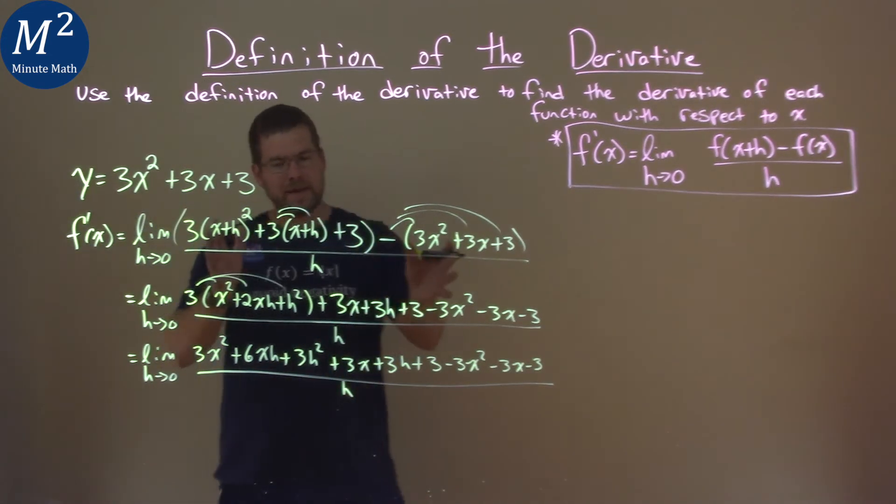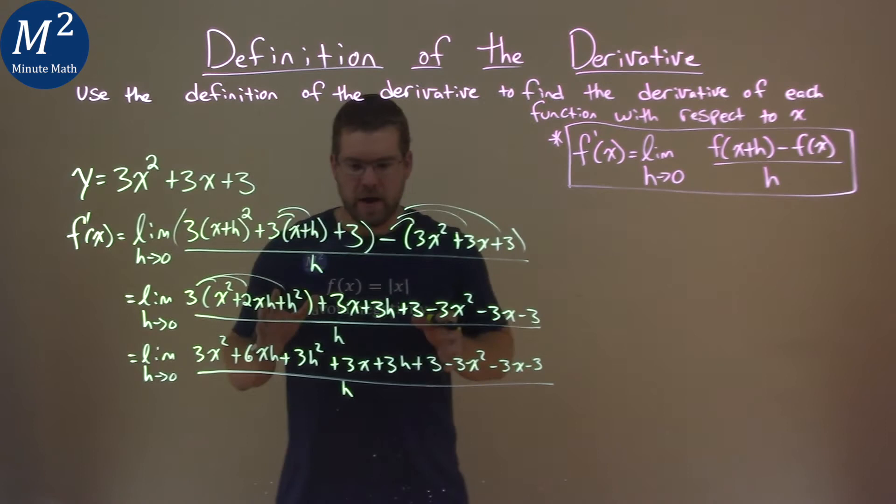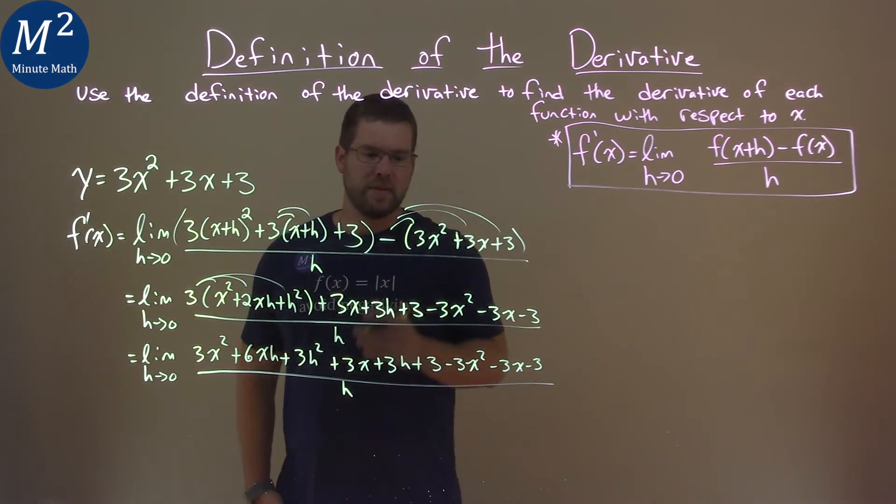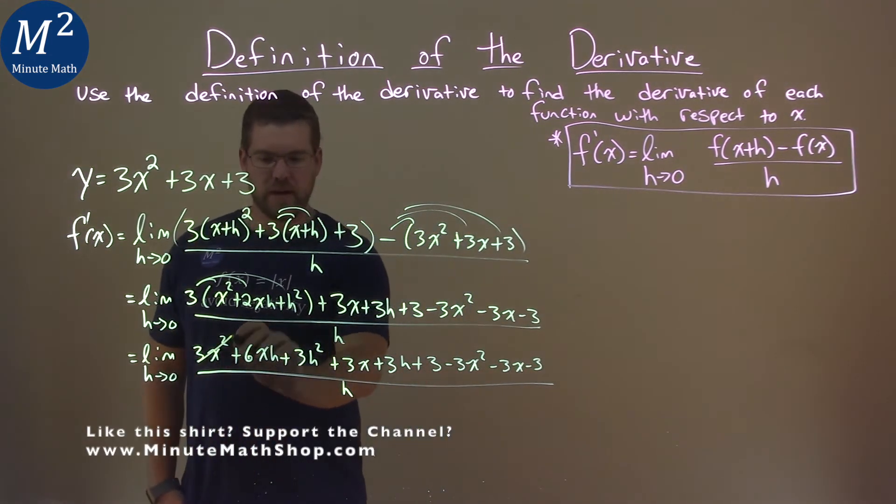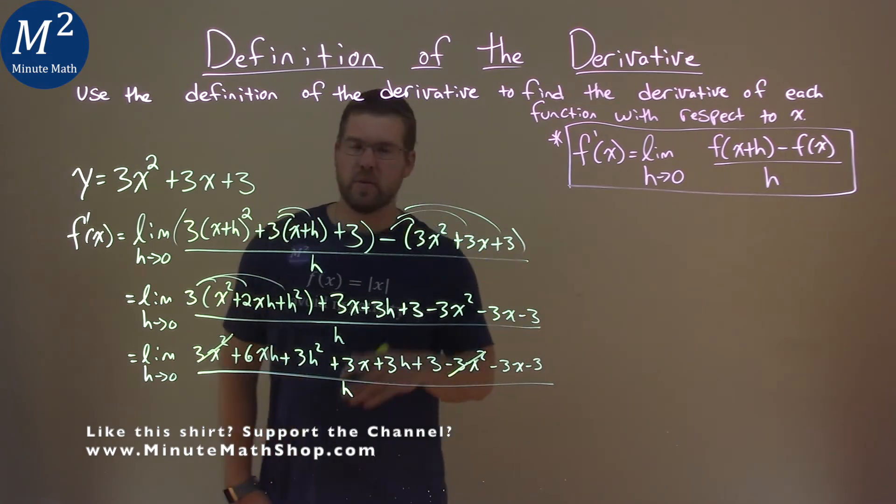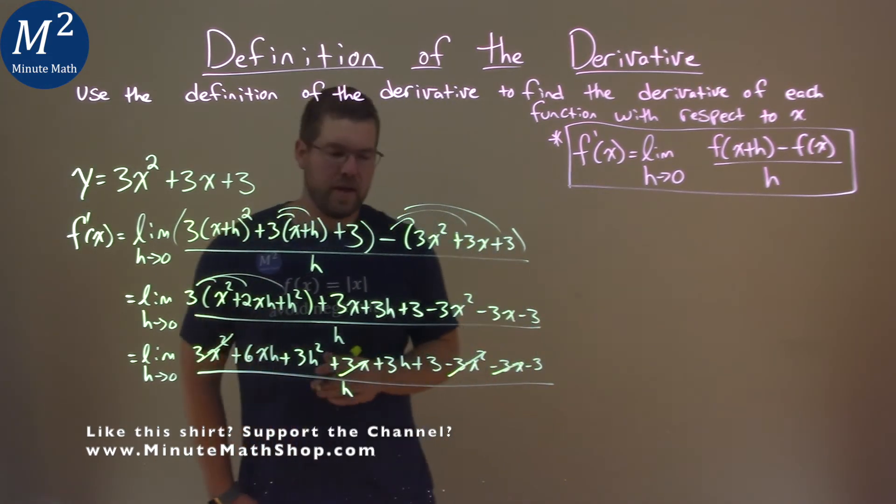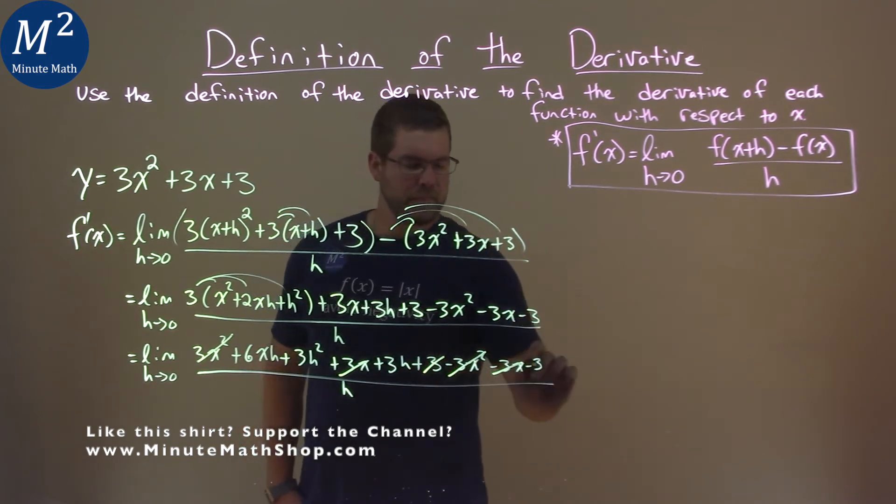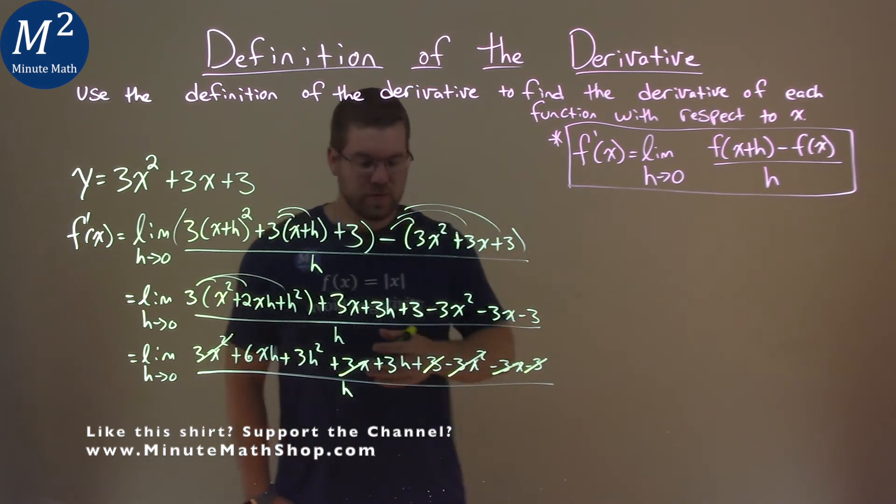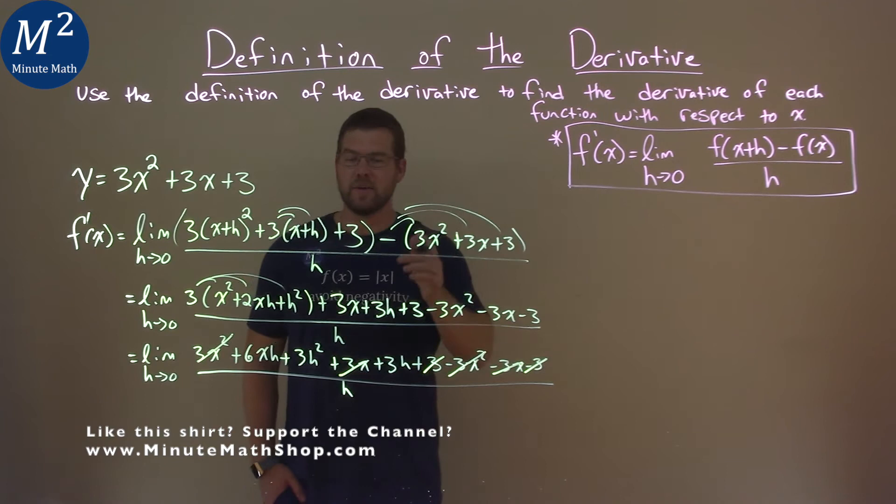Okay. Now we have to pay attention here and see if we get it right. I'm going to try to cross off everything that we can. I see 3x squared here and minus 3x squared—cancel it out. 3x and minus 3x right there cancels. 3 minus 3 cancels. That's almost everything.